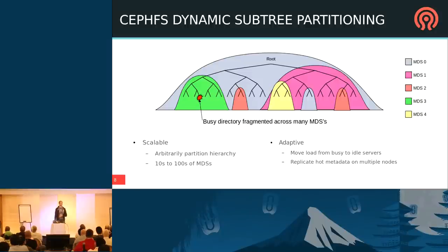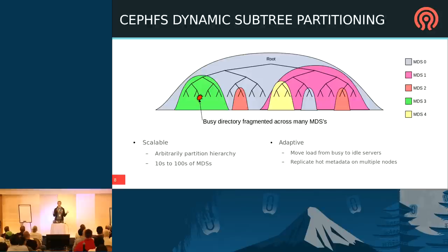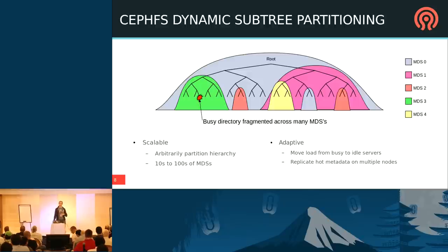What truly makes CephFS unique is its use of dynamic subtree partitioning. CephFS on the fly takes pieces of the file system hierarchy and distributes them among different metadata servers. You can even take a single busy directory and shard it into fragments distributed across different metadata servers. This makes the Ceph metadata server cluster highly scalable, supporting tens or hundreds of metadata servers. It's also adaptive — the partition is based on current workload, so metadata servers migrate load from busy to idle servers over time.